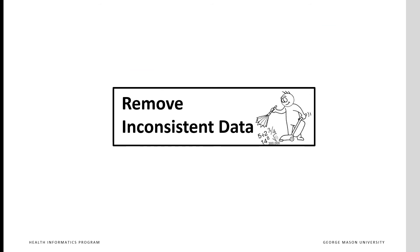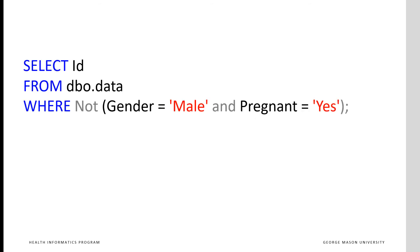Now, we will discuss inconsistent data. Some combinations of data are unreasonable and may need to be removed. In this snippet, we are keeping only patients who are not pregnant males. Think through your own data and remove all patients who have combinations of fields that should not occur.